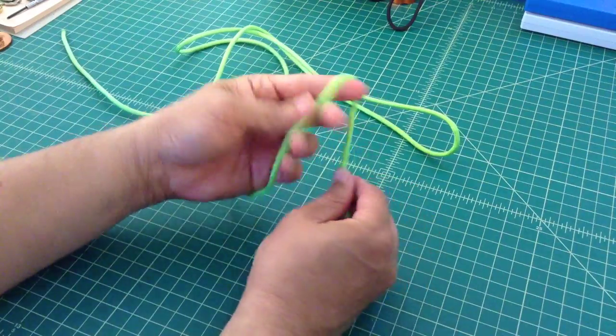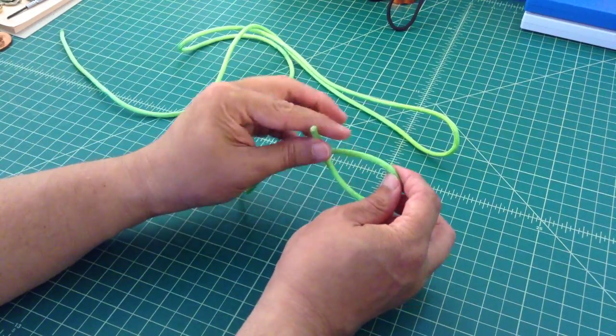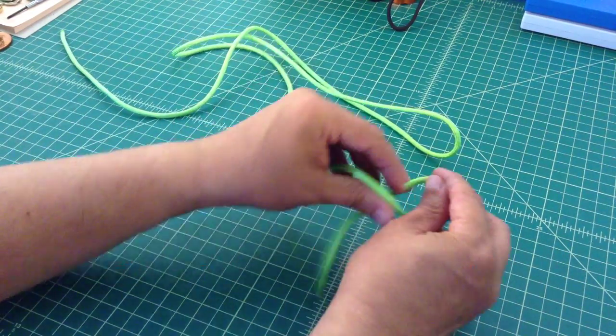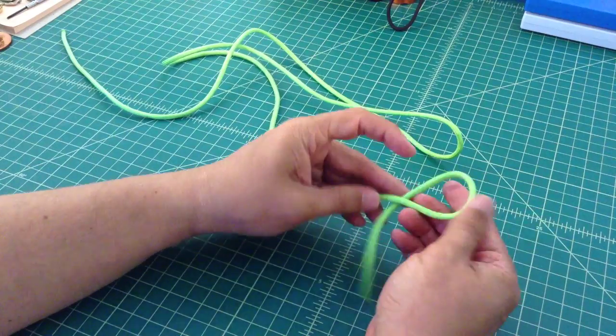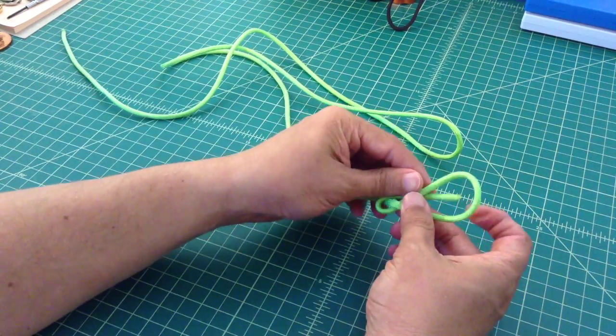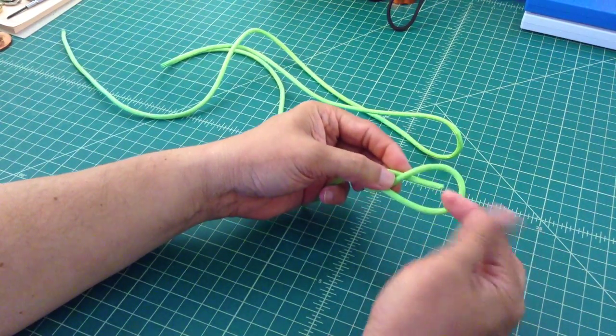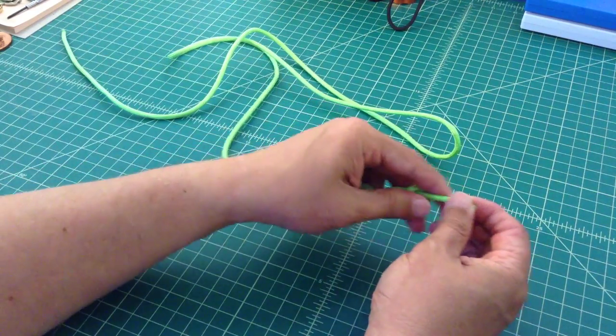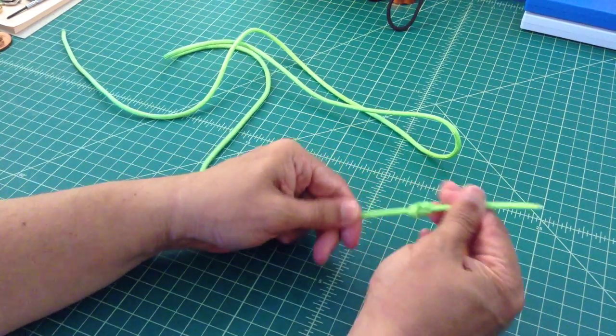Now there's nothing wrong with that simple overhand knot but another knot that you can use is the figure eight knot. So the way you do that is you just make a loop, come over yourself and then come up through the first loop that you've made. And then there you have your figure eight knot.